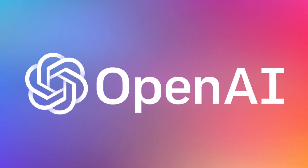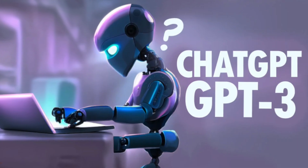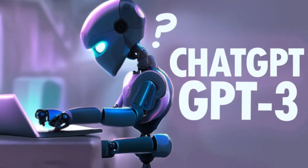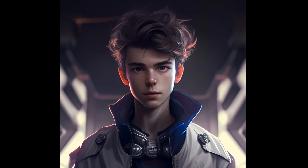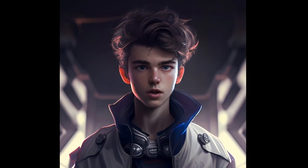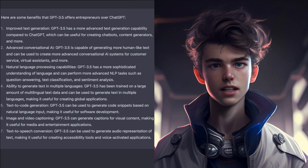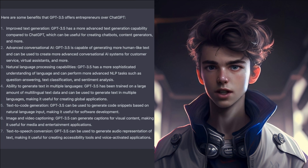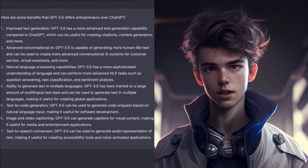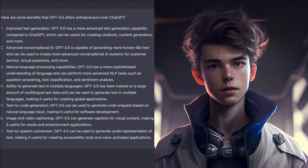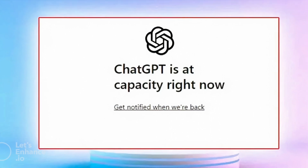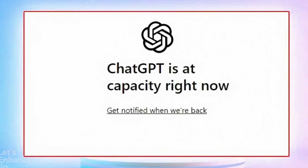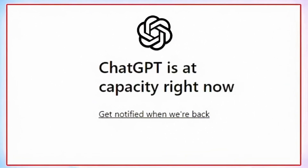OpenAI has developed two cutting-edge AI language models: GPT3 and ChatGPT. While they may seem similar at first, they actually serve very different purposes. ChatGPT is a variant of GPT3 that has been fine-tuned for conversational text generation. It's free to use and great for generating human-like text in response to input queries. However, it can be easily overwhelmed and temporarily inaccessible, as it was not designed to handle large-scale applications.